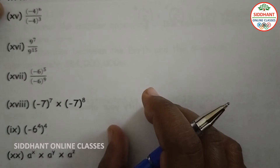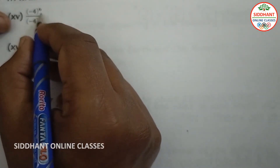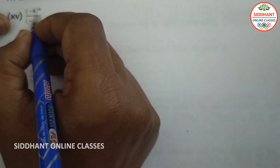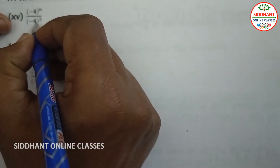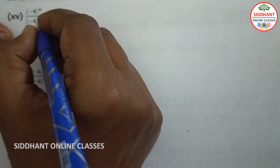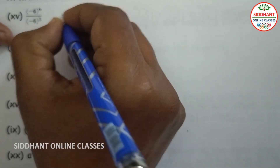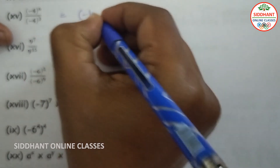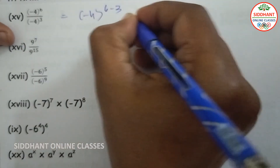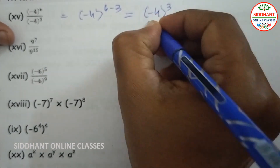Fifteenth one: (-4) to the power of 6 divided by (-4) to the power of 3. Bases are same, so we subtract the powers: (-4) to the power of 6 minus 3, that will be (-4) to the power of 3.